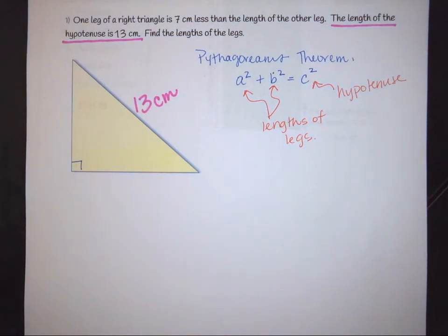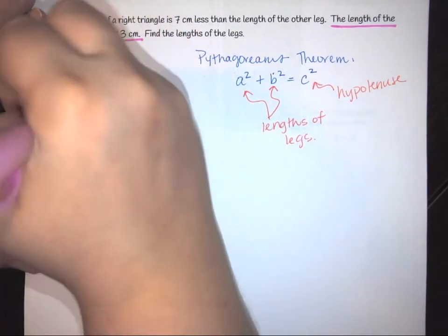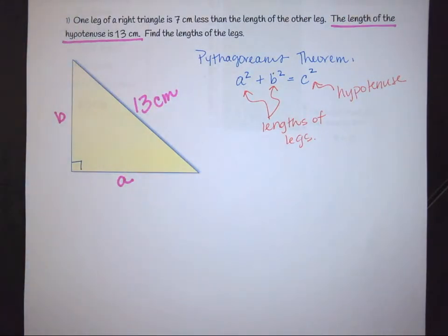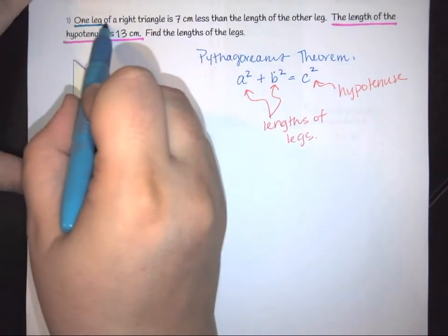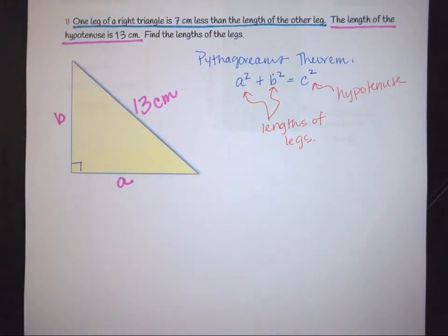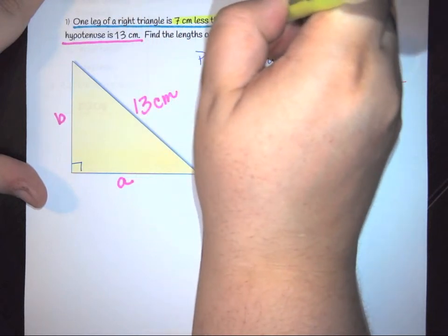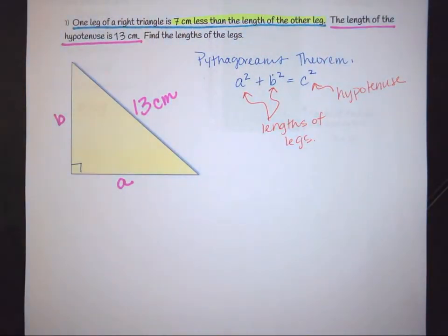Now, the other thing that I know is I know that I have two legs. I have side a and I have side b. With that, I'm also given some more information. And the information that I've been given is the fact that I know one leg is seven centimeters less than the other. So the first thing I have to look at is I have to look at what part of that sentence is important to me. And the part of that sentence that's important to me is that I have seven centimeters less than the length of the other.